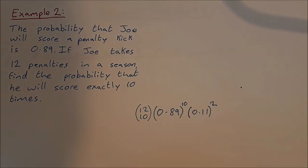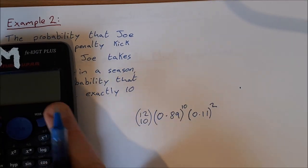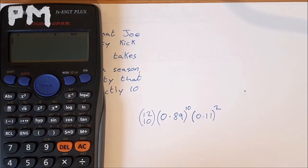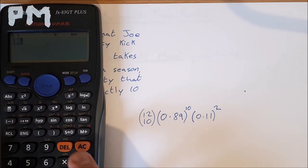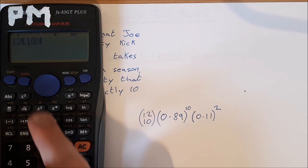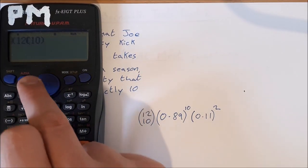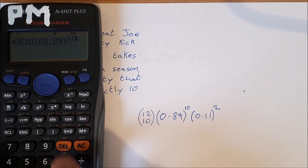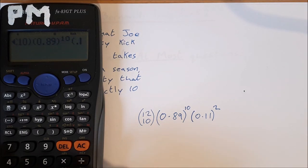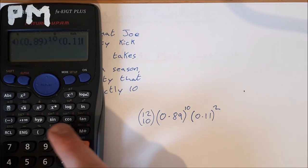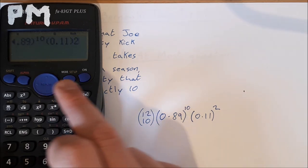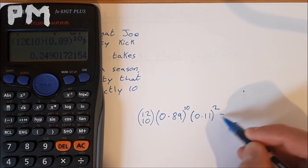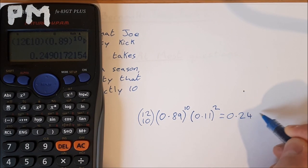Okay, and that's what you put into your calculator there. So 12 choose 10, just pop it into brackets, and that will be times 0.89 to the power of 10, and that's times 0.11 to the power of 2, equals 0.249.